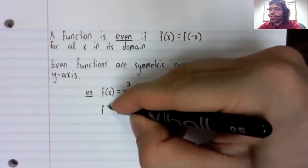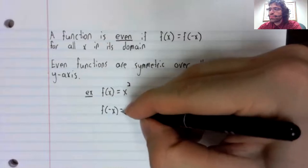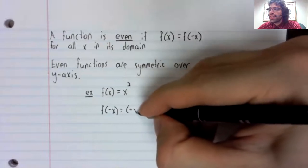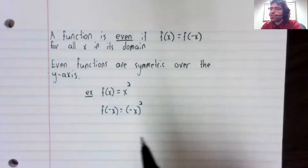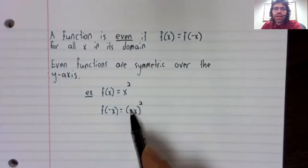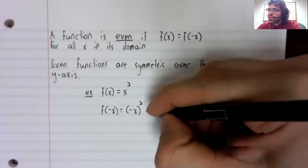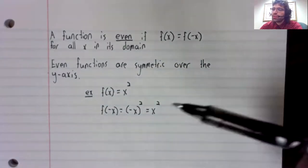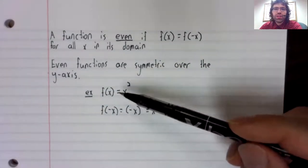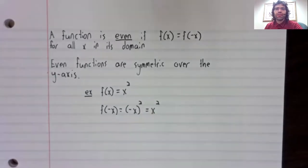f(-x) is negative x squared. Squaring gets rid of the negative sign. So this is positive x squared. And you see f(x) equals f(-x).